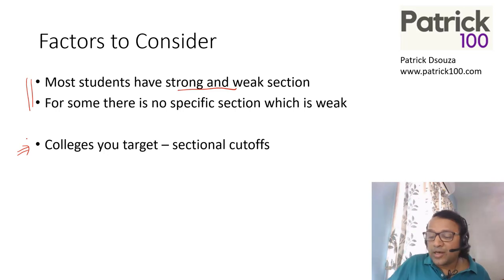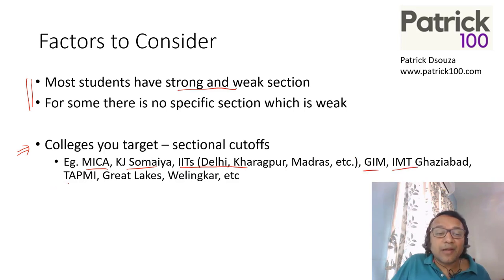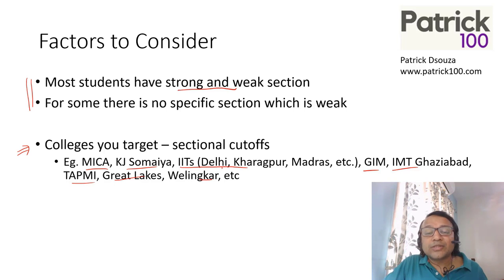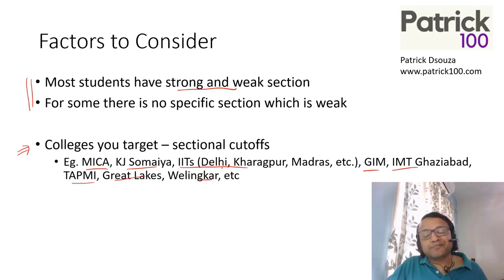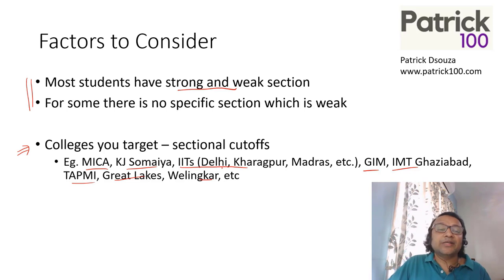Sectional cutoffs being present or not will determine your focus. A lot of colleges like MICA, KJ Somaiya, IITs, TAPMI, Great Lakes, and Wellingkar do not have sectional cutoffs. So if you are looking at any such colleges, then you need to focus on overall cutoffs rather than sectional cutoffs. Check out what you're looking at — if these colleges may have comparatively low sectional cutoffs, focus on maximizing your scores for a higher chance of getting a call.